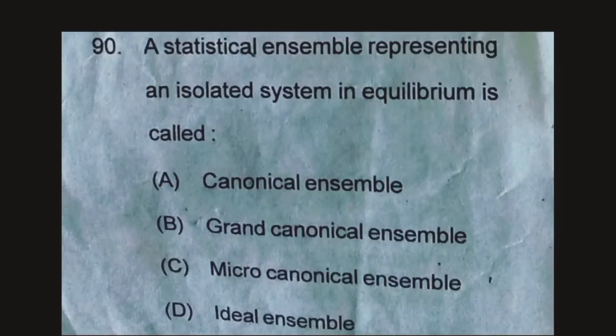The next question, question number 90, a statistical ensemble representing an isolated system in equilibrium is called canonical ensemble, grand canonical ensemble, micro canonical ensemble, and ideal ensemble.